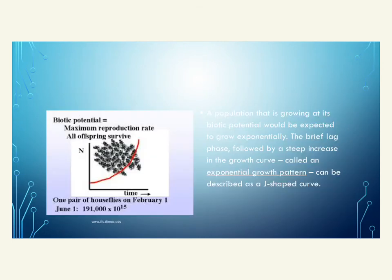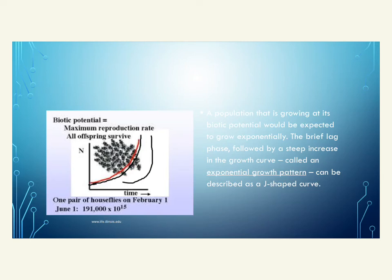If a population grows at its biotic potential and we graph it, the growth is exponential. We start lower with a small population, but it quickly rises in an exponential pattern. This is described as a J-shaped curve, representing exponential growth at the biotic potential.